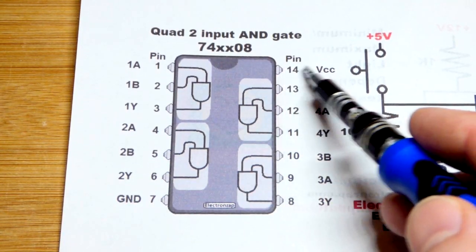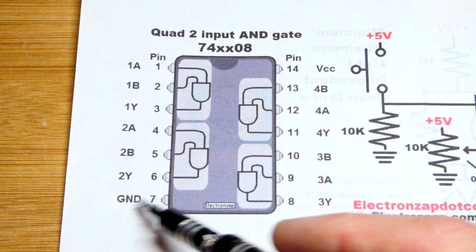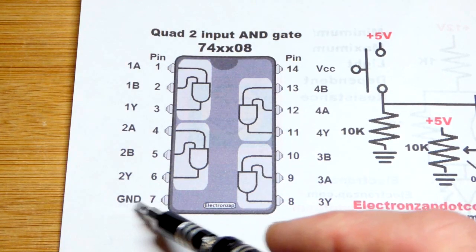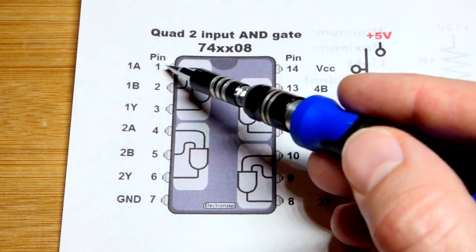But in any case, positive side of the supply, 5 volts to pin 14, VCC, and the negative side of the supply, ground. That's our 0 volt reference point right there. But other than that, the pin layout for the AND gates are the same.